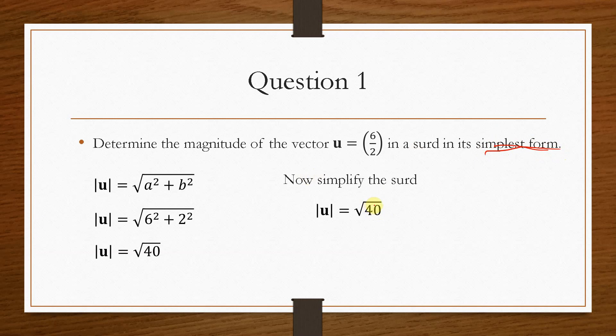So let's try root 4 and root 10, because we know what the square root of 4 is, that would give us 2. And this would be in its simplest form, so therefore the magnitude of vector u is 2 root 10.